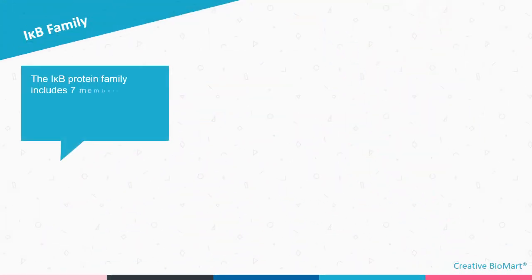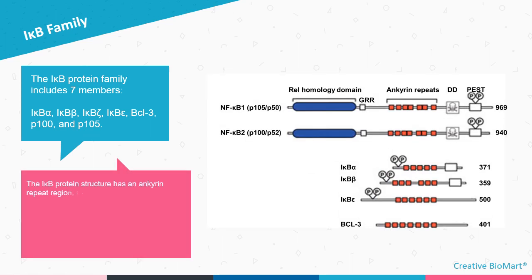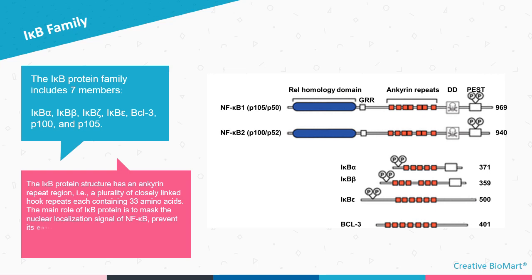The I-Kappa-B protein family includes 7 members: I-Kappa-B-alpha, I-Kappa-B-beta, I-Kappa-B-zeta, I-Kappa-B-epsilon, BCL-3, protein 100, and protein 105. The I-Kappa-B protein structure has an ankyrin repeat region, consisting of a plurality of closely linked hook repeats each containing 33 amino acids. The main role of I-Kappa-B protein is to mask the nuclear localization signal of NF-Kappa-B, prevent its entry into the nucleus and its binding to DNA, and keep NF-Kappa-B in an inactive form in the cytoplasm.